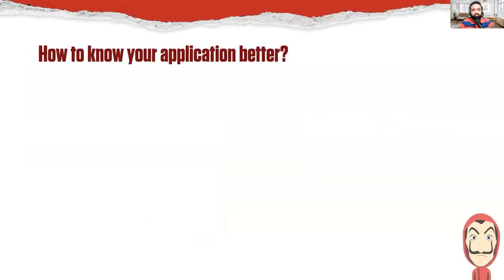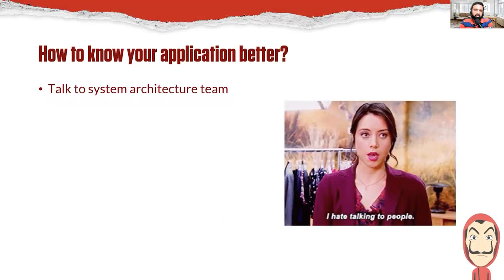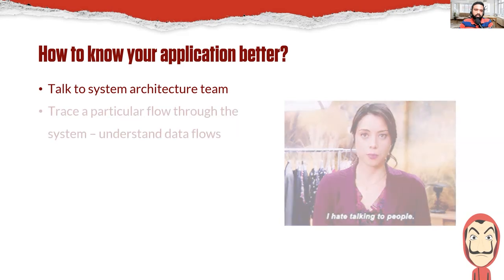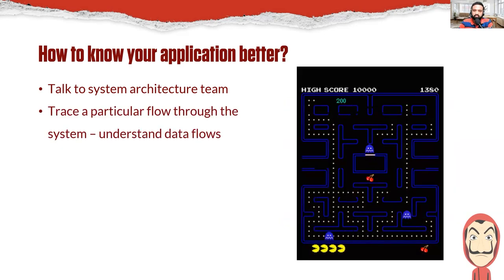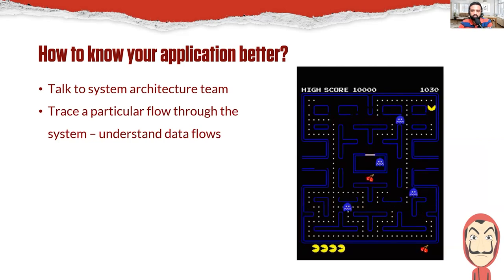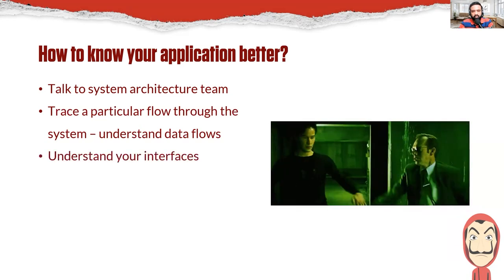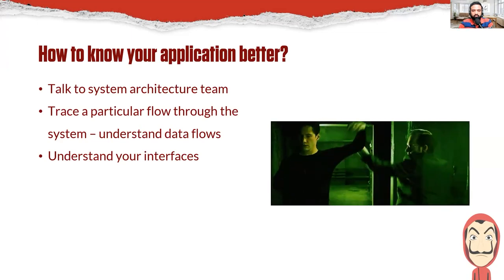To get to know your application better, start talking to people — mainly the system architecture team. Talk to the people around you; they know the system slightly better than you might. Once you get to know the system, try to trace a particular flow through it. Understand the data — the data flows like Pac-Man, so you need to trace all the corners to get all the points. That's how our systems also work, and you'll also come across your interfaces.